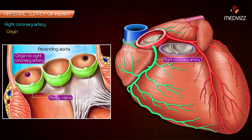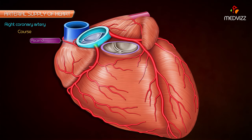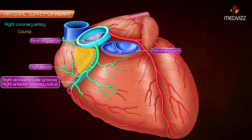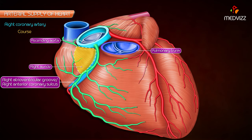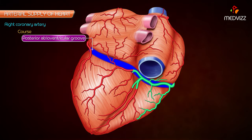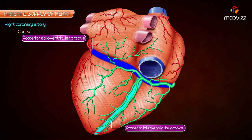Right coronary artery origin: the right coronary artery arises from the anterior aortic sinus of the ascending aorta immediately above the aortic valve. After arising, it first runs forwards between the pulmonary trunk and the right auricle, then descends almost vertically into the right atrioventricular groove — the right anterior coronary sulcus — up to the junction of the right and inferior borders of the heart. At the inferior border it turns posteriorly and runs in the posterior atrioventricular groove up to the posterior interventricular groove, terminating by anastomosing with the left coronary artery.